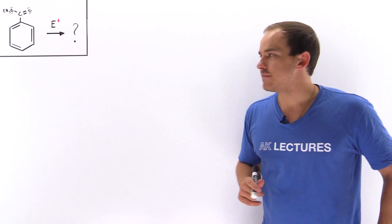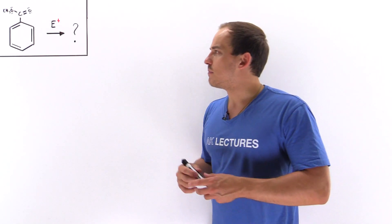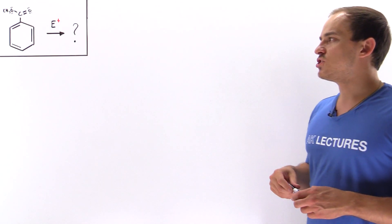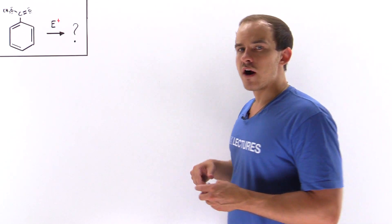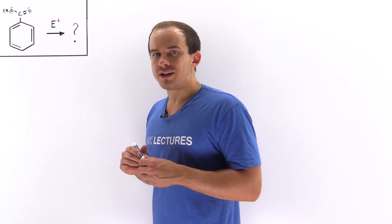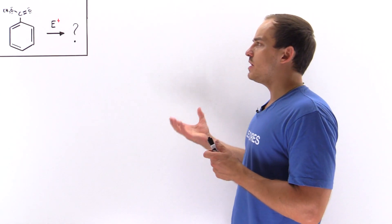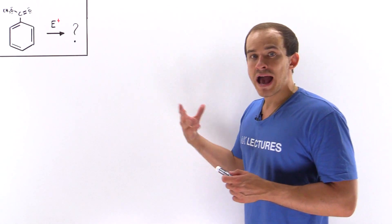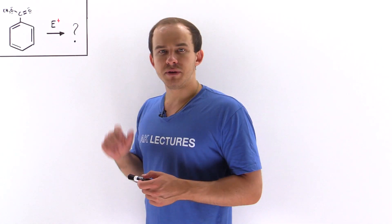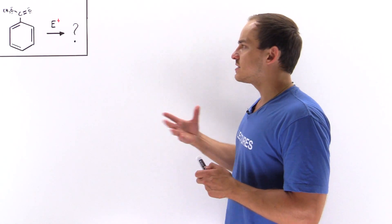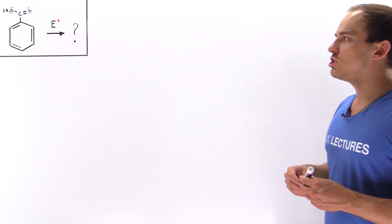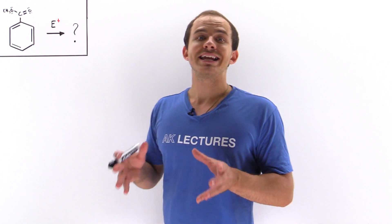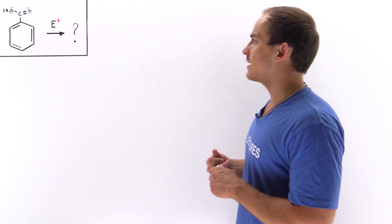Suppose we are given a monosubstituted benzene, and we want to react it with an electrophile. The question we want to answer is: what will be the product that will predominate? Will it be the ortho-para or will it be the meta? To answer this question, we need to examine the intermediate molecule involved in this reaction.